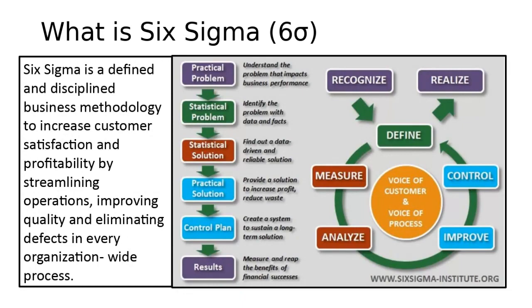Let's start with the Six Sigma methodology. The Six Sigma methodology is a discipline or business methodology to increase customer satisfaction and reduce variability, which is equivalent to defects in the process, to improve the process control and overall quality.